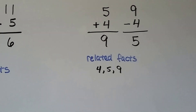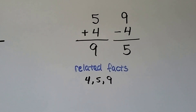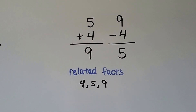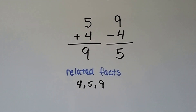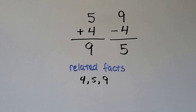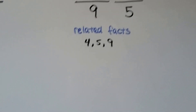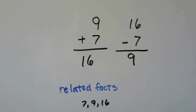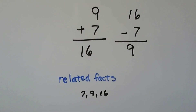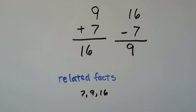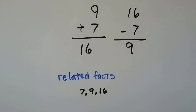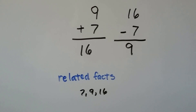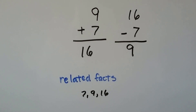5 plus 4 is 9, and 9 minus 4 is 5. The related facts are 4, 5, and 9. 9 plus 7 is 16, and 16 minus 7 equals 9. The related facts are 7, 9, and 16.